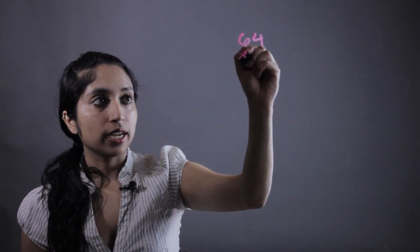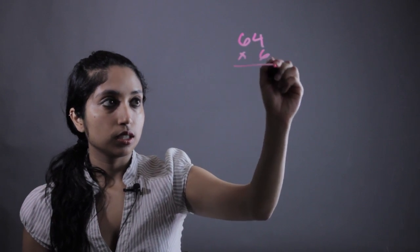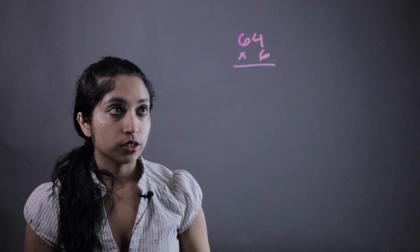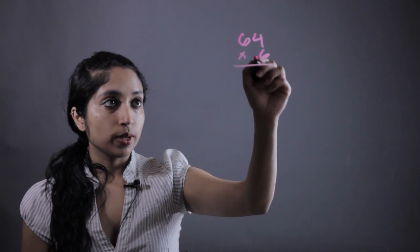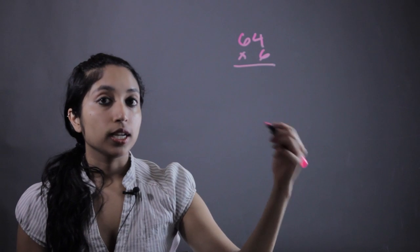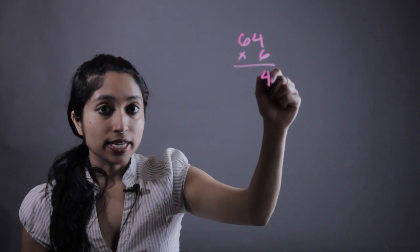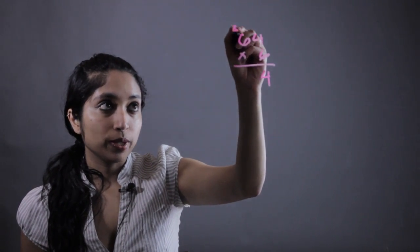Now say we had some number 64 times 6. With traditional multiplication, all you have to do is multiply each individual number and carry over what's left. So 6 times 4 is 24. When I say carry over, I mean we write the 2 up here.